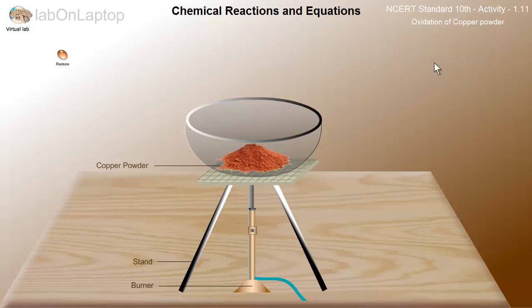So in this experiment, we are going to see how oxidation happens in copper powder. This chapter is the name of Chemical Reactions and Equations. So here you have a tripod, a bowl, we have kept copper powder and a burner.